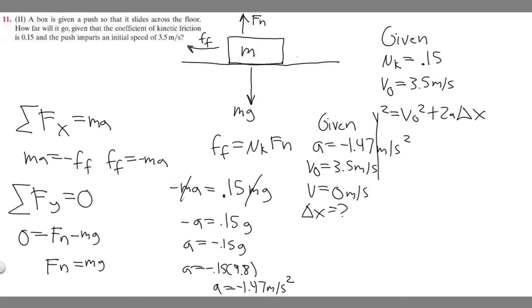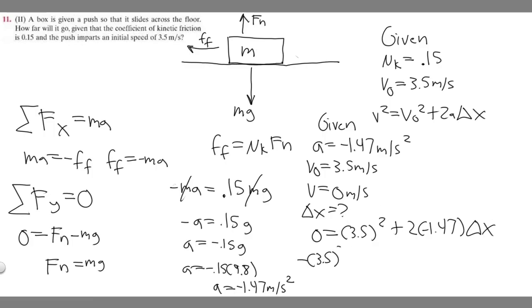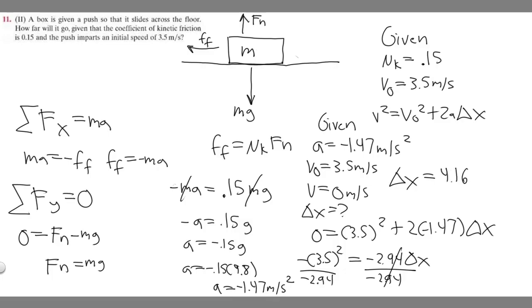We have all the values, so we plug in: 0 squared equals 3.5 squared plus 2 times (minus 1.47) times delta x. Moving 3.5 squared to the other side: minus 3.5 squared equals 2 times minus 1.47, which is minus 2.94, times delta x. Dividing both sides by minus 2.94, delta x equals minus 3.5 squared over minus 2.94. Plugging that into the calculator gives approximately 4.166.